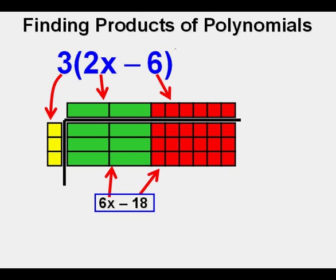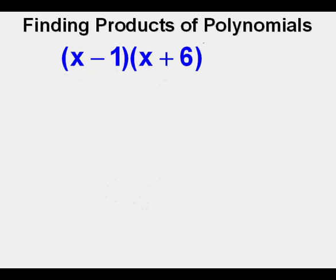I hope you were able to see that by using algebra tiles we have done essentially the same thing we did earlier when we calculated the area of the tabletop by breaking it into two parts. In our first problem using algebra tiles we multiplied a monomial 3 by a binomial 2x minus 6. In this problem we'll find the product of two binomials using algebra tiles and that would be quantity x minus 1 times quantity x plus 6.